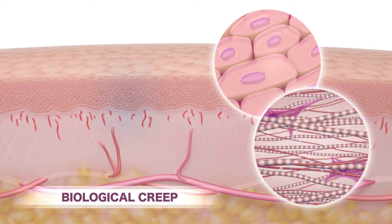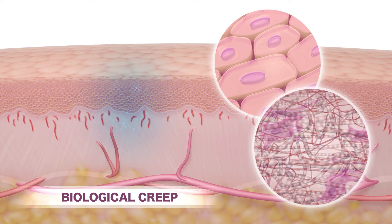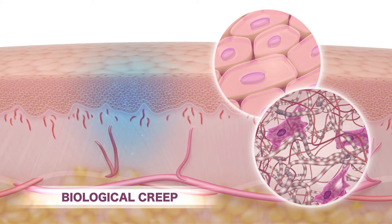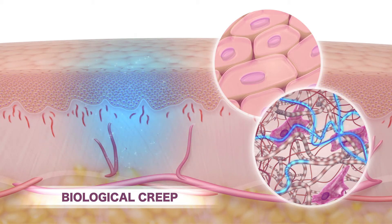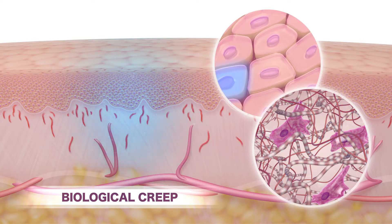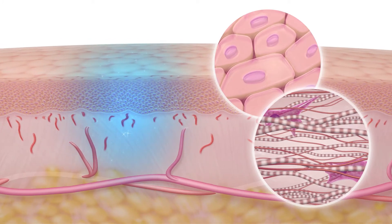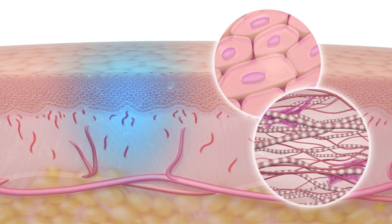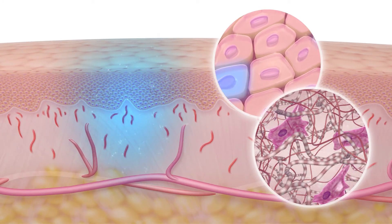In this natural physiological process, fibroblast numbers increase and become activated, synthesizing new collagen. Vascularity is increased and new skin cells are created. Mechanical stretch and biological creep act together to expand skin to almost limitless proportions.